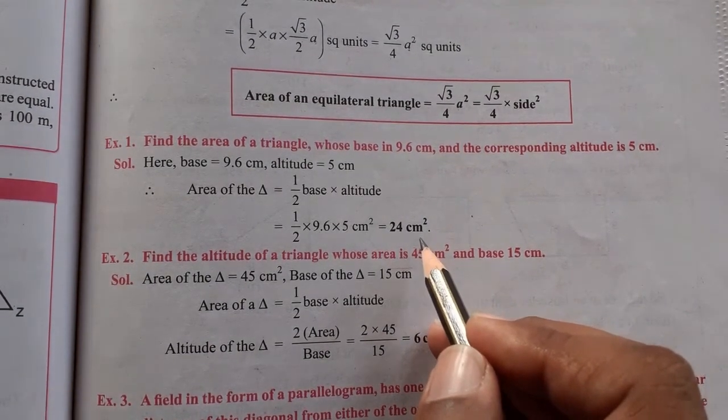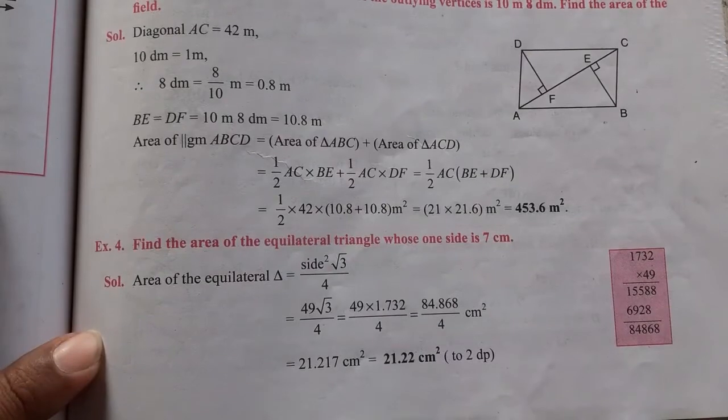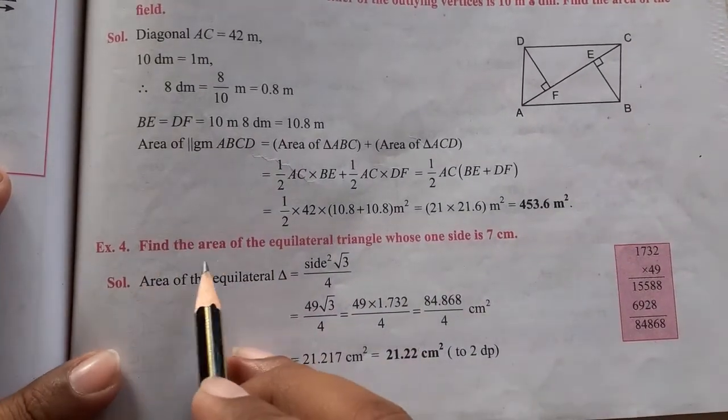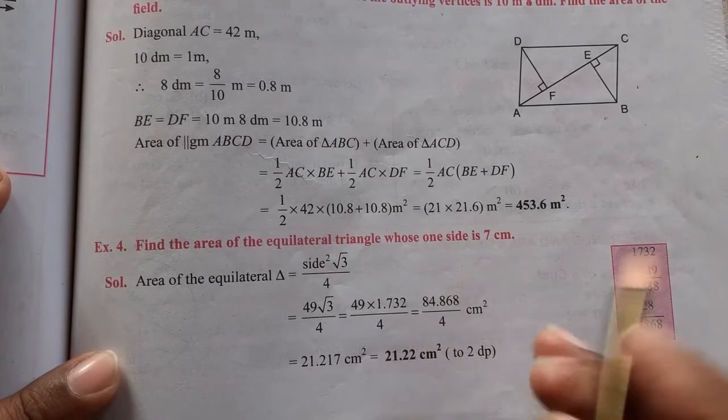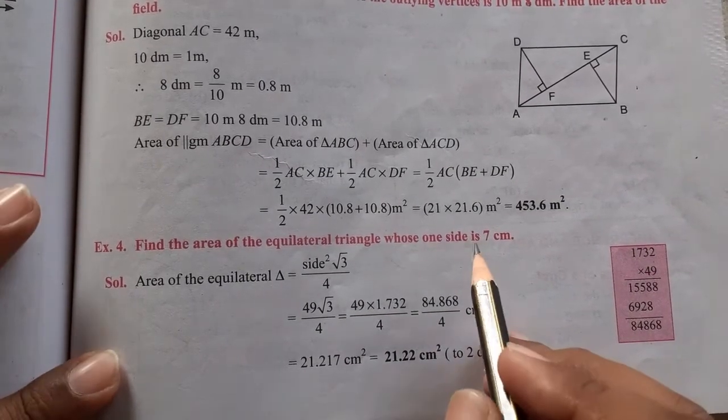Let's see our next example. Let's do our last example. Find the area of an equilateral triangle whose one side is 7 cm. So we have to find when one side is 7 cm.